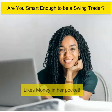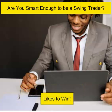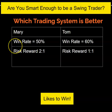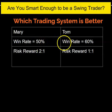This is swing trader Mary — she likes money. This is swing trader Tom — he likes to win. Mary has a trading algorithm with a win rate of fifty percent: she wins half the time and loses half the time. Tom has a win rate of sixty percent — he wins more and loses less.